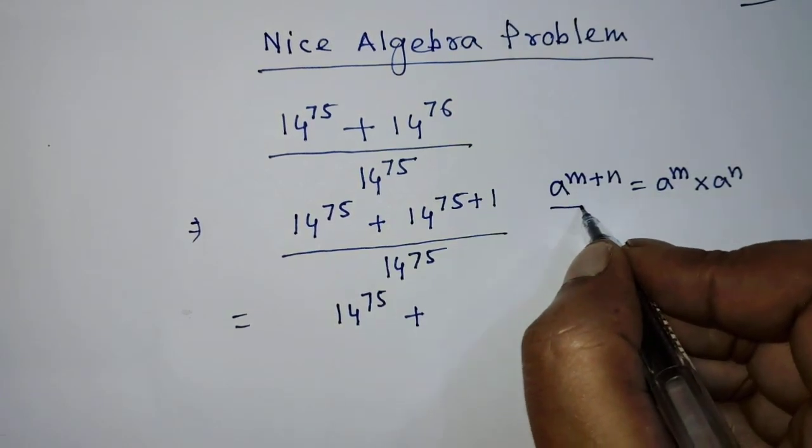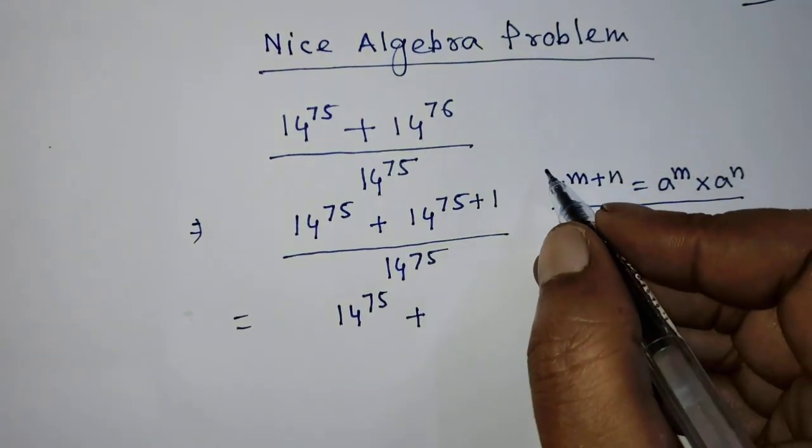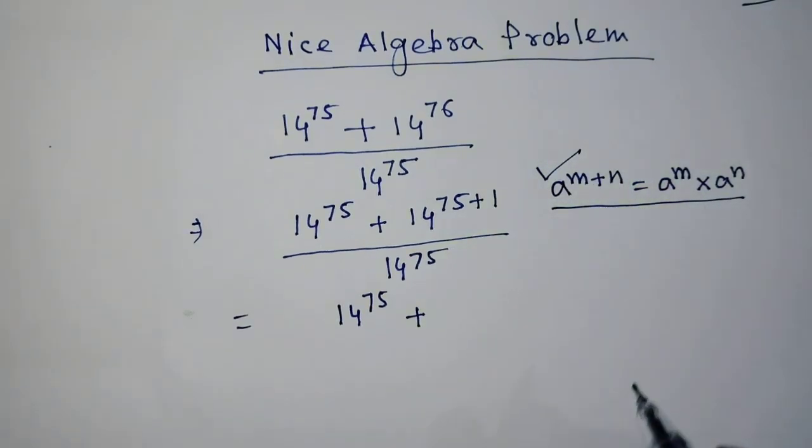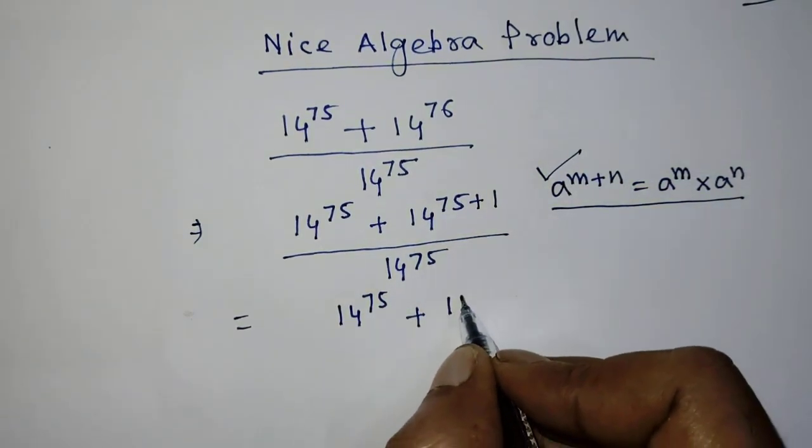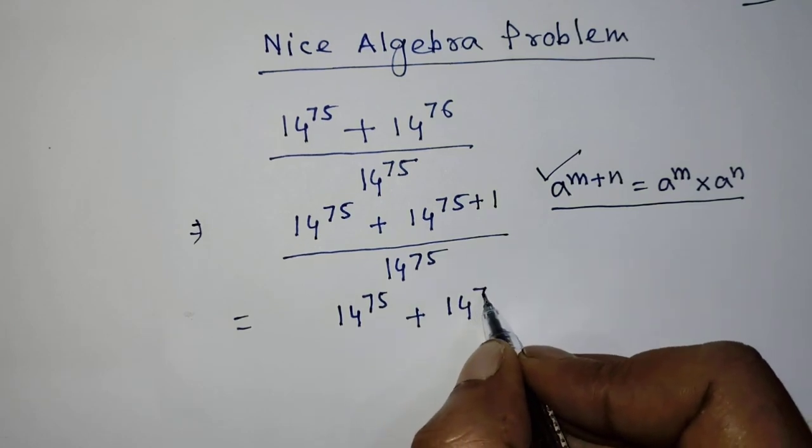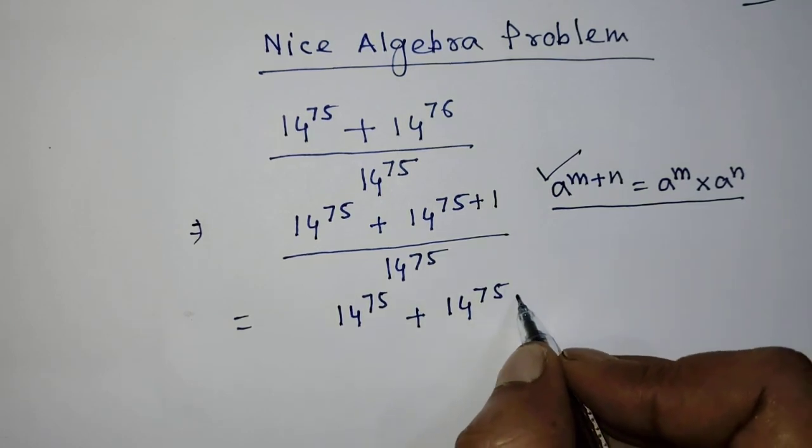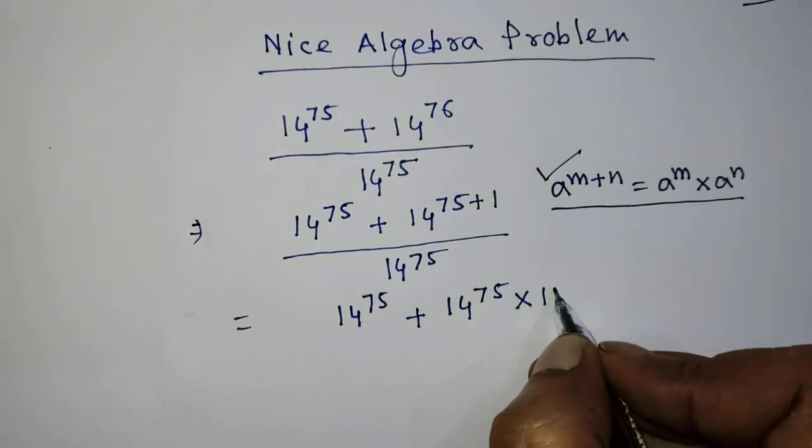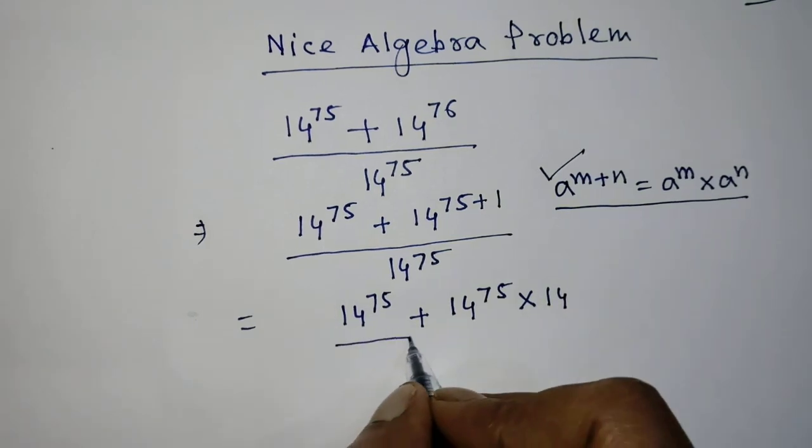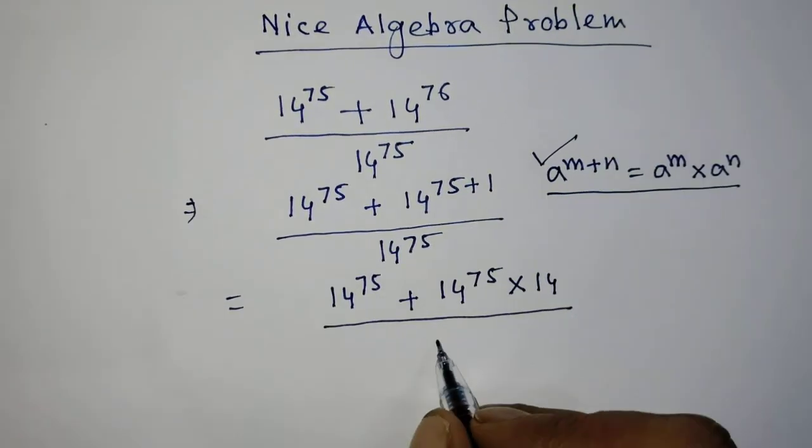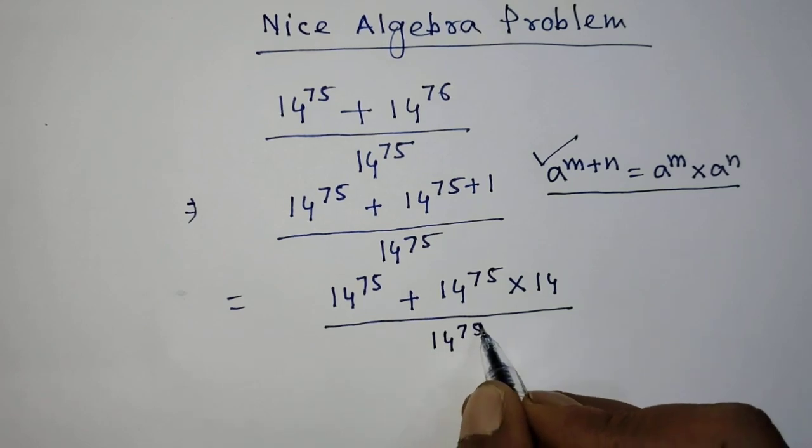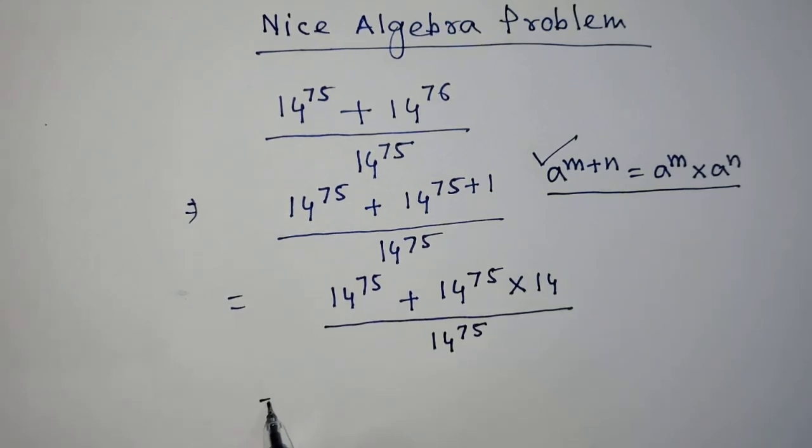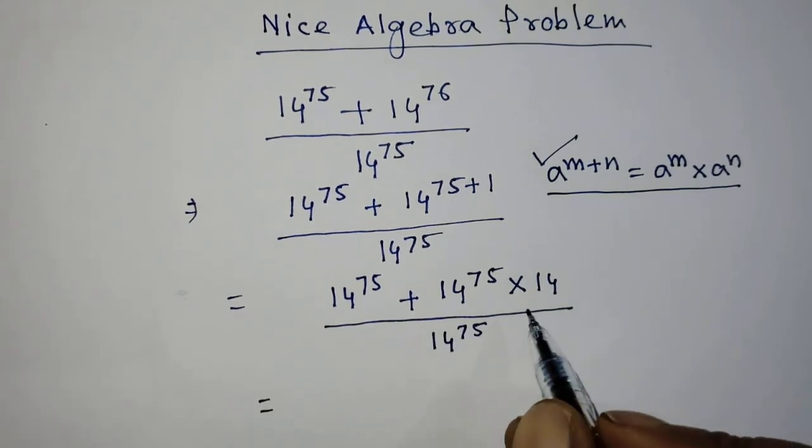So according to this formula, it will be 14 to the power 75 times 14, over 14 to the power 75.